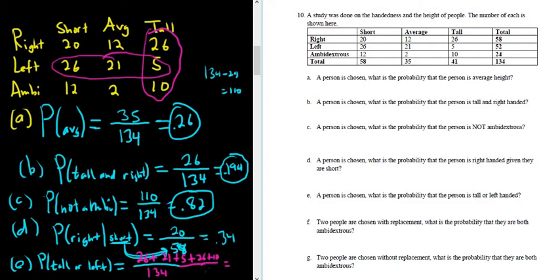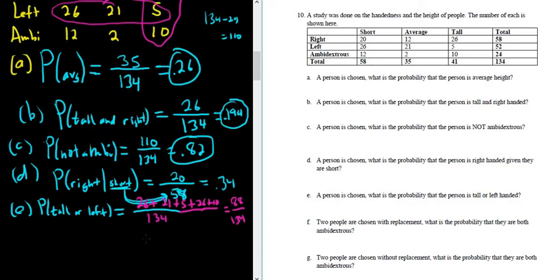You can use the formula too, but this is a little bit easier. We circle the tall, we circle the left, and we add. Typing into the calculator: 26 plus 21 plus 5 plus 26 plus 10 — I got 88. So 88 over 134 is 0.66.